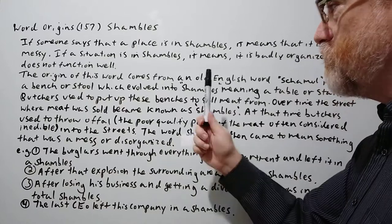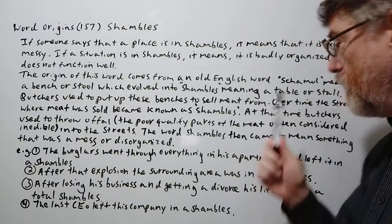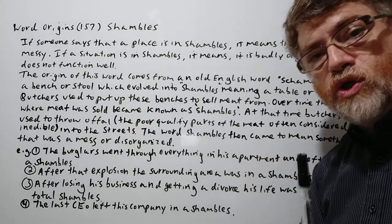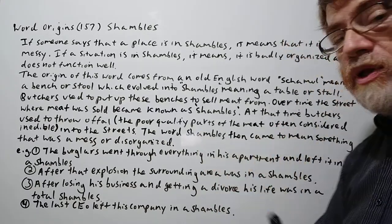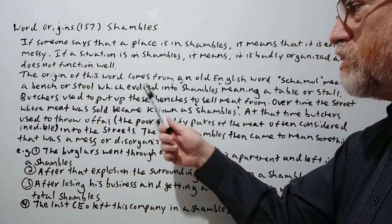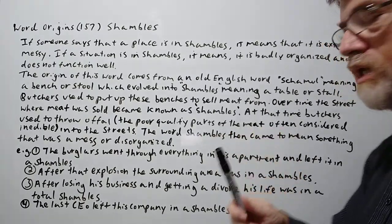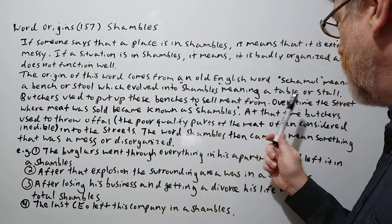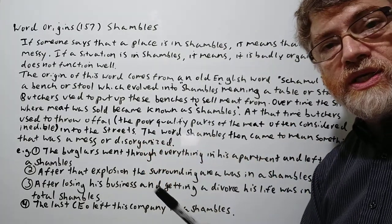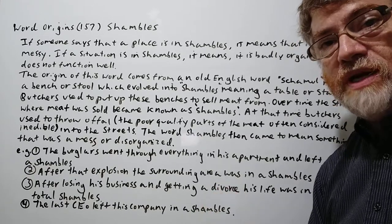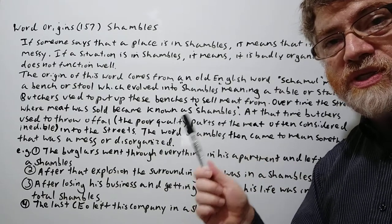The origin of this word comes from an Old English word shambles meaning a bench or stool, which evolved into shambles meaning a table or stall. Butchers used to set up the benches to sell meat, probably out in the street. Over time, the street where meat was sold became known as shambles — that was the origin of shambles, always where the butcher would set up.